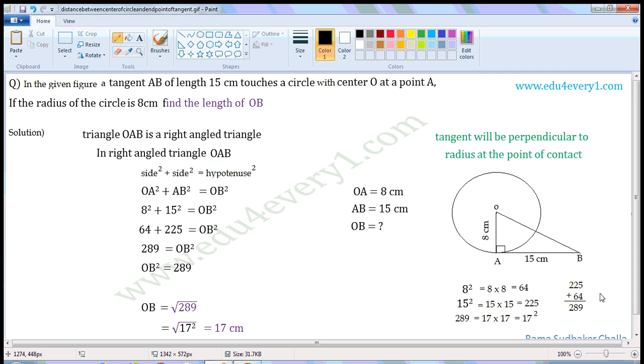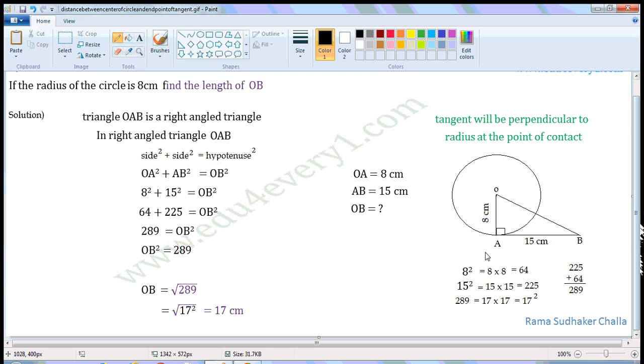64 plus 225 is 289, so we can write this as 289 = OB², or OB² = 289. Then OB will be equal to √289.